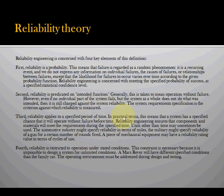Reliability engineering is concerned with four things. First, reliability is a probability — failure is regarded as a random phenomenon and it is a reoccurring event. Second, reliability predicts intended function, generally taken to mean operation without failure. Third, reliability applies to a specific period of time. And fourth, reliability is restricted to operation under stated conditions — that's environmental conditions and so on.